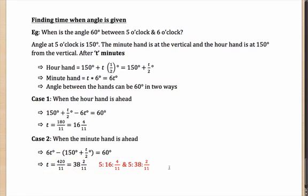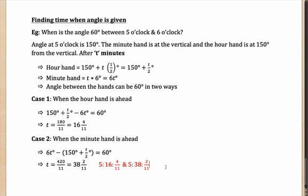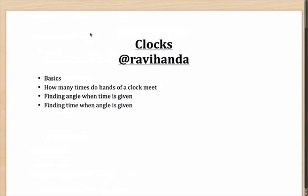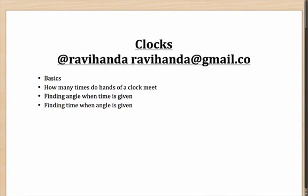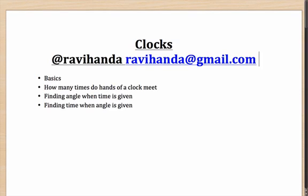So you get two answers: 5:16 4/11 — when the minute hand is behind and the hour hand is ahead — and 5:38 2/11 — when the hour hand is behind and the minute hand is ahead. These are the two times when the angle is 60 degrees between 5 o'clock and 6 o'clock. Hope you found this session useful. Please provide feedback via Twitter @Ravihanda or email at ravihanda@gmail.com. Thank you, hope to see you again, bye-bye.